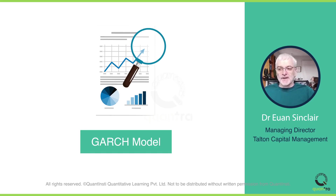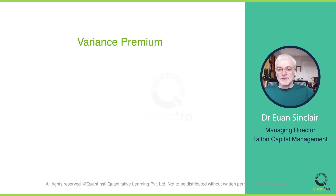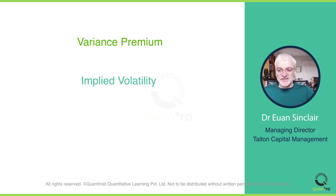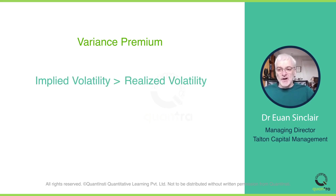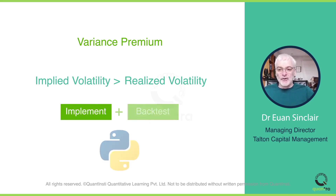Now let's talk about the variance premium. This is an interesting concept which suggests that implied volatility, reflected in the price of the options, tends to be higher than the realized volatility of the stock. But here's the exciting part — you can actually benefit from this. This course will take you through the implementation of strategies based on this, and you'll learn how to backtest them using Python.